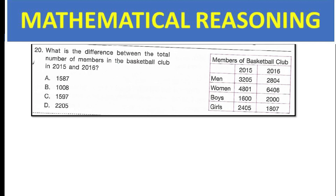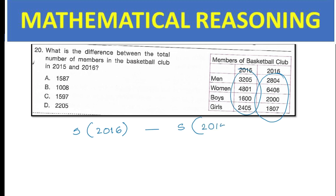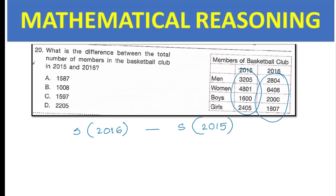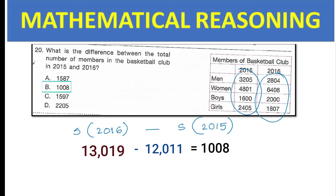What is the difference between the total number of members in the basketball club in 2015 and 2016? The sum of members in 2016 is 13,019. The sum of members in 2015 is 12,011. The difference is 1,008 — option B.